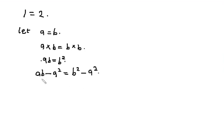From here, I can factorize A. So I have A times open bracket B minus A. And this is equal to... this looks like a difference of two squares. So we have B minus A times B plus A.